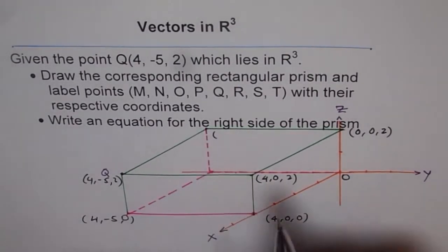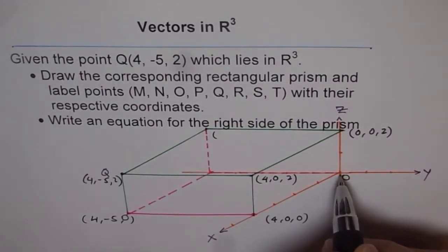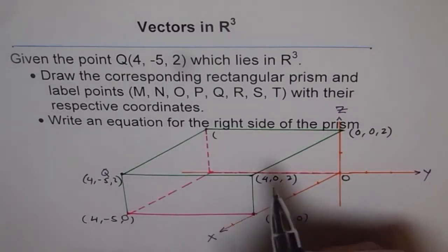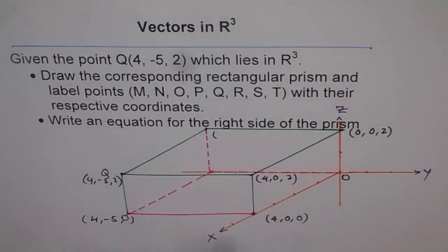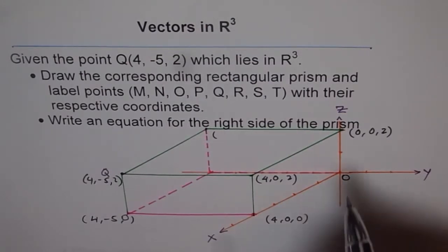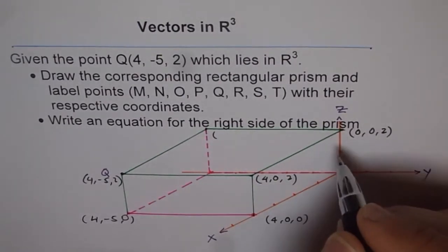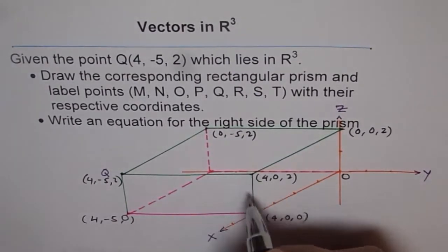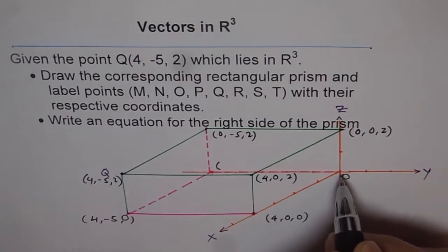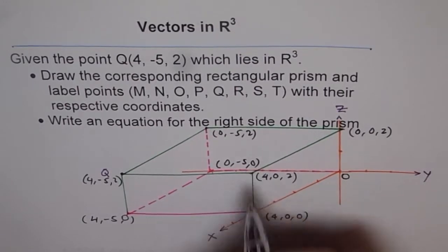Then from here, we went to this point, which is 4 and minus 5, 0, correct? And then we went to Q, which is 4, minus 5, and 2, correct? So that is how we got our points. Now from here, we can write all of the points. This point is, for us, we didn't move anything on X and Y, but there are two units, Z. So we got 0, 0, 2.